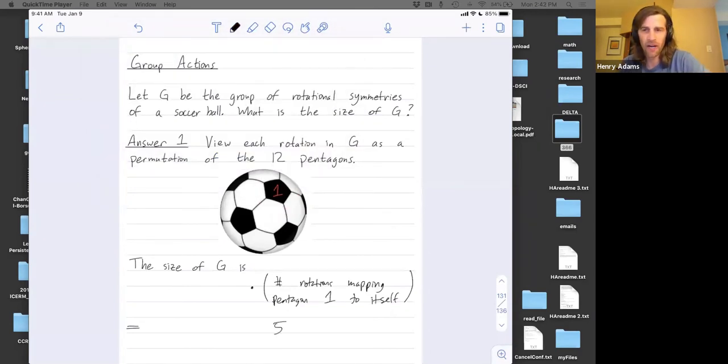What do I multiply that by? Well, I multiply that by the number of pentagons that pentagon one can get mapped to. And there's nothing restricting me from taking this pentagon to any other pentagon on the soccer ball. So that's 12.